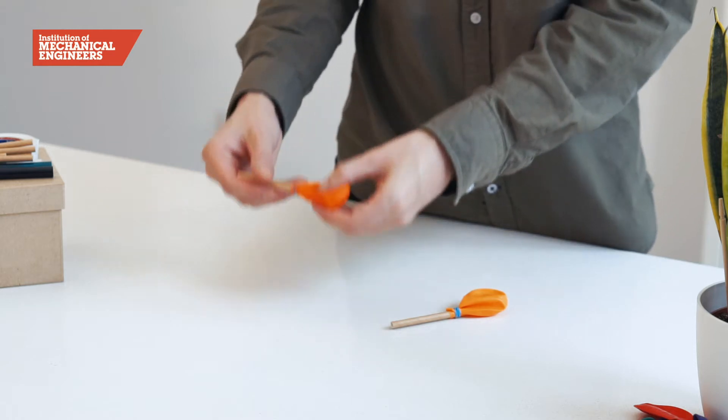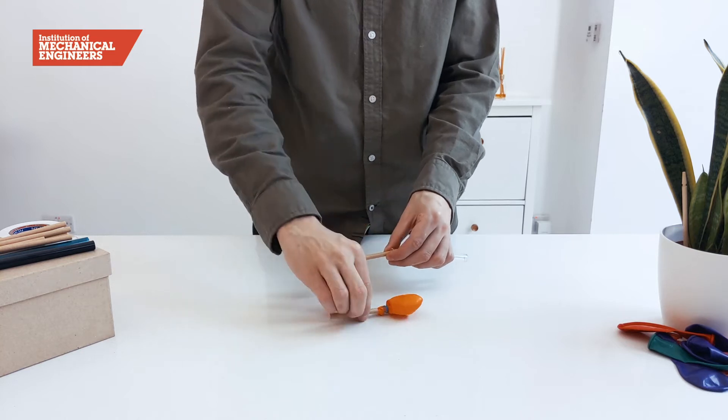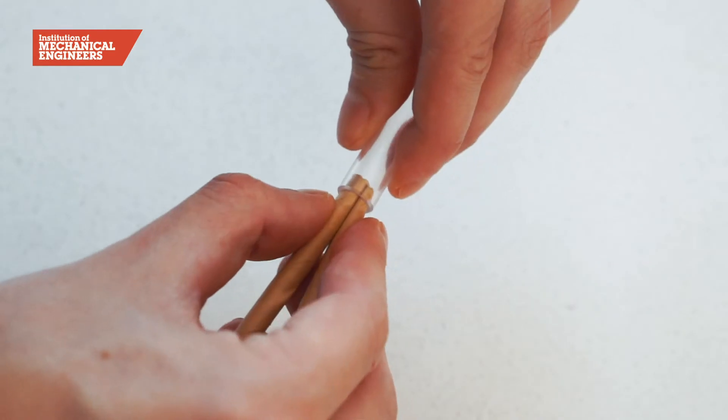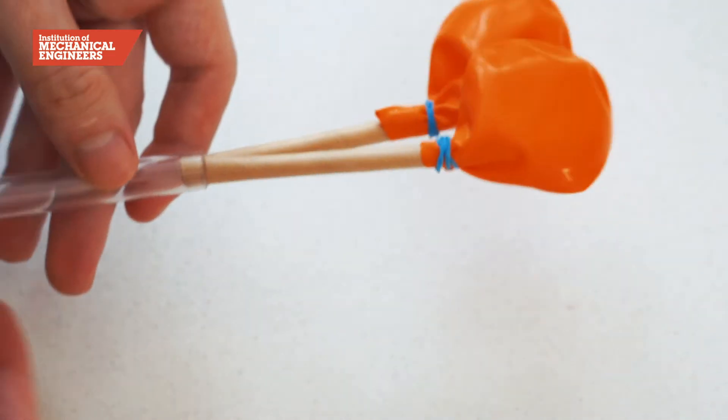Now we will model the trachea using the thicker smoothie straw. Trim the straw then push the two thinner straws inside. It is important to take care not to crush them as this will prevent air passing through.